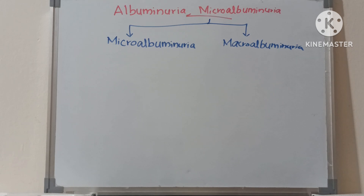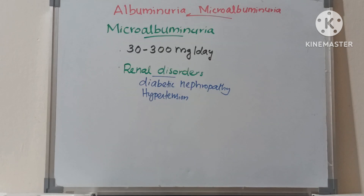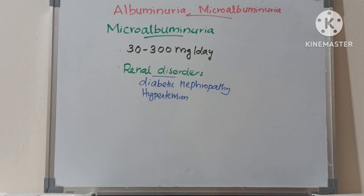Albuminuria is of two types: microalbuminuria and macroalbuminuria. Microalbuminuria is when albumin is present in urine in a high amount, in the range of 30 to 300 mg per day. This is a warning signal for renal disorders, especially diabetic nephropathy and hypertension.